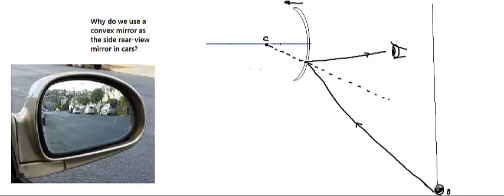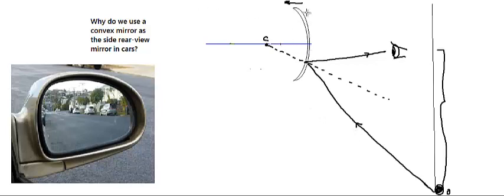I'll draw a reference line here. With the convex mirror, we are able to see an object at this distance. Now, what happens if we have a plane mirror? The plane mirror is placed at the same location. For the same point of reflection and the same reflected ray, in the case of a plane mirror the normal changes — it is perpendicular to the mirror — so the angle of reflection decreases.